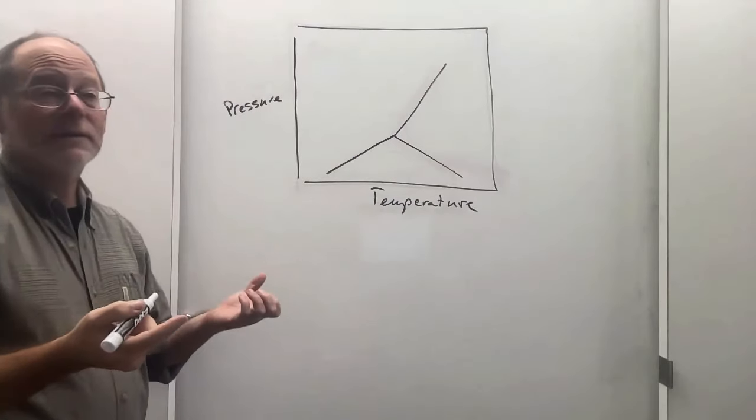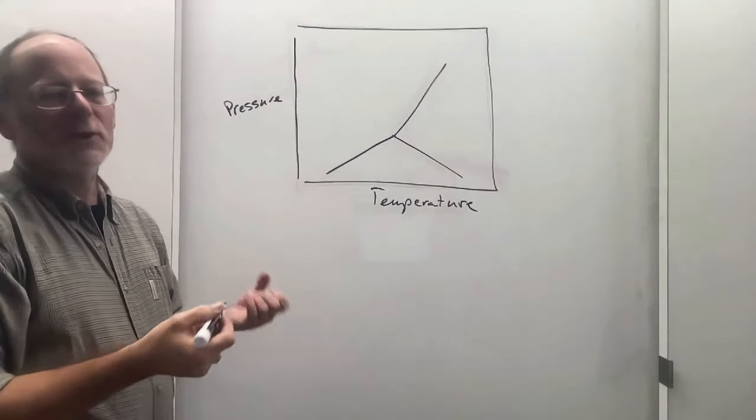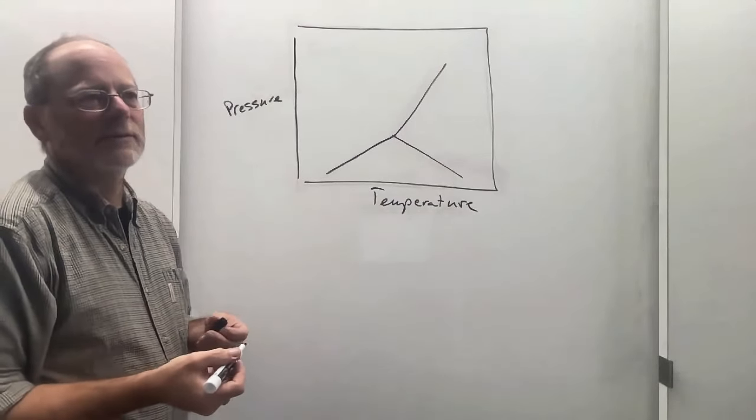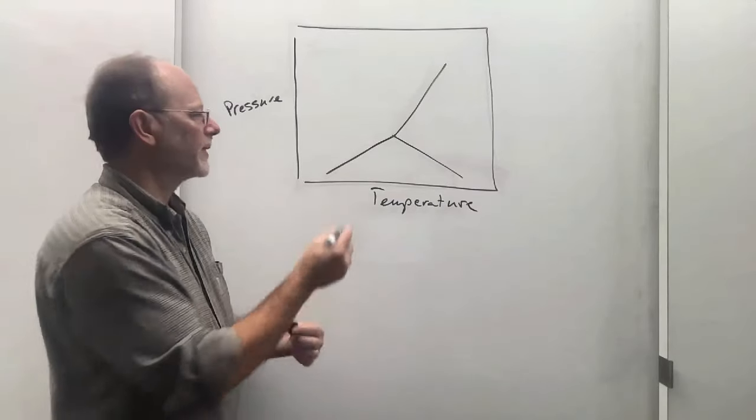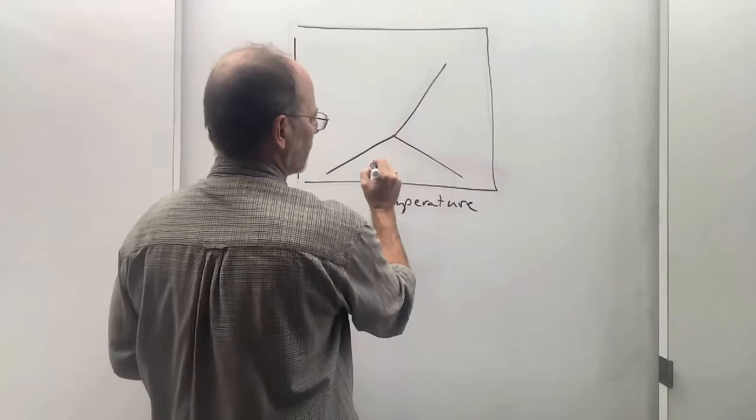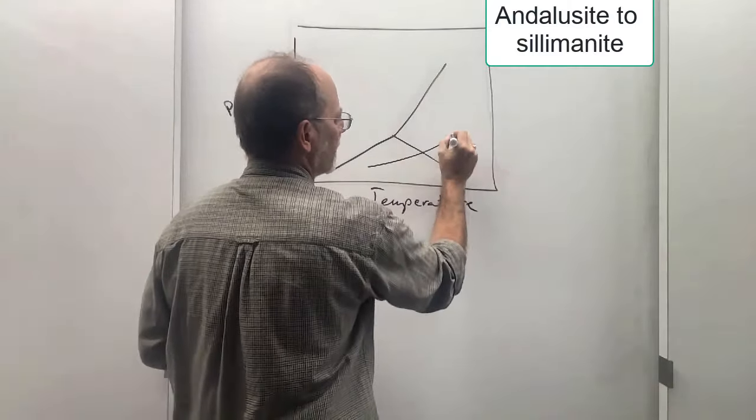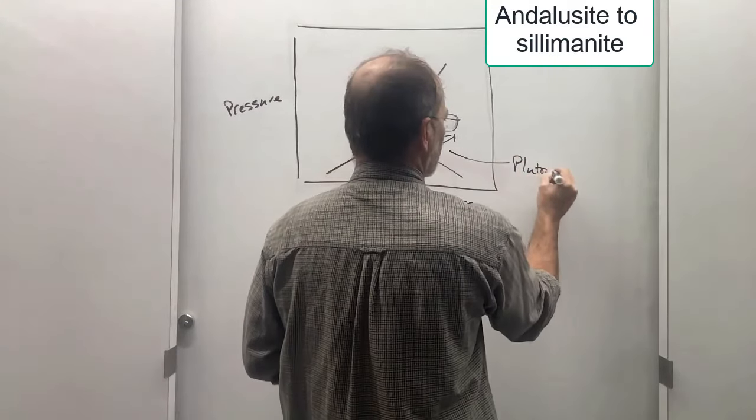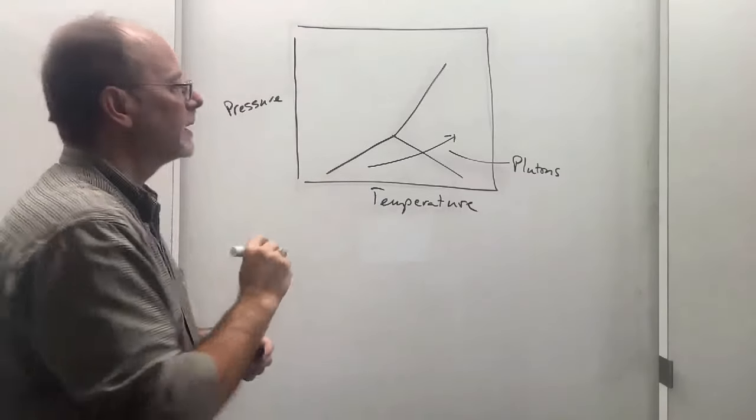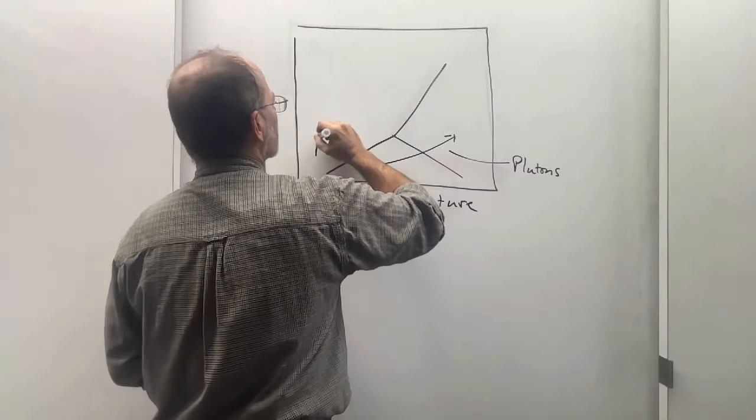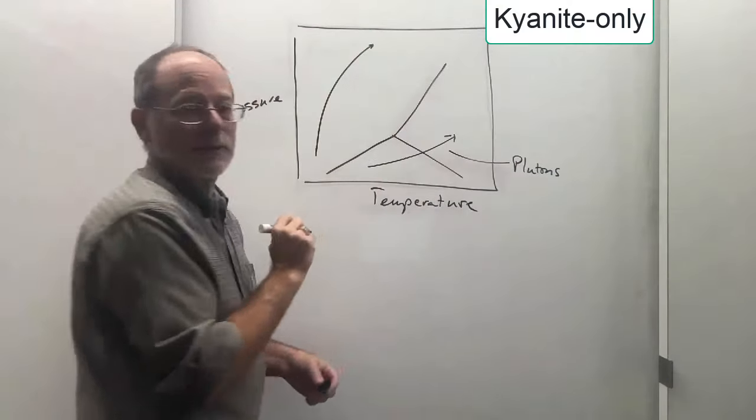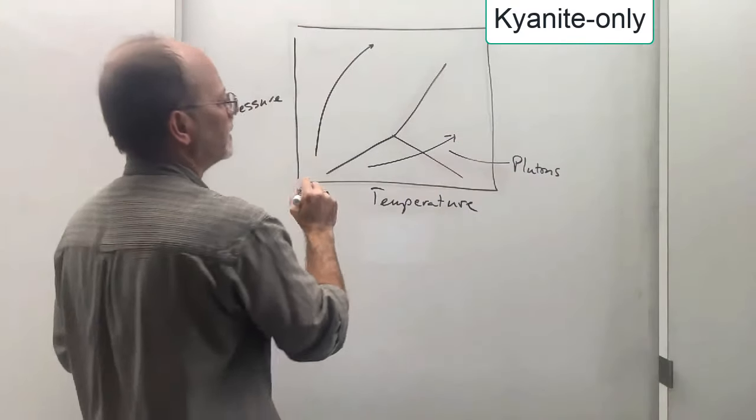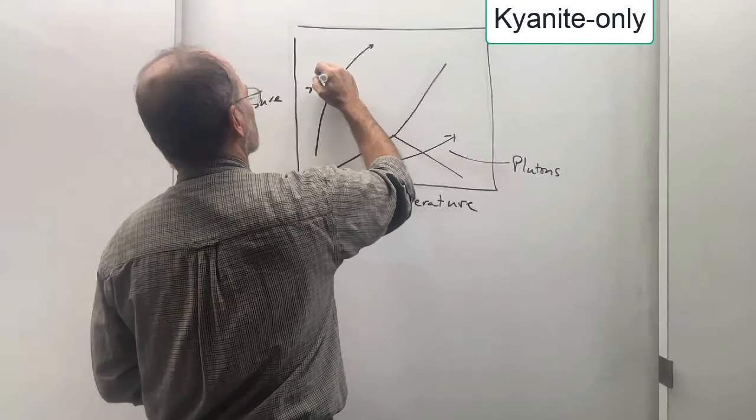There are three different distributions of metamorphic mineral assemblages that we see. In low pressure systems, we see andalusite to sillimanite, that's around plutons. In subduction zones, we see increases in pressure, so this is subduction.